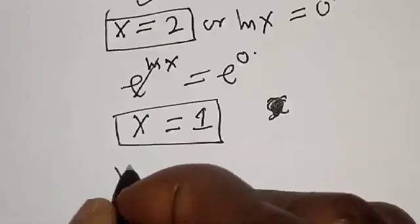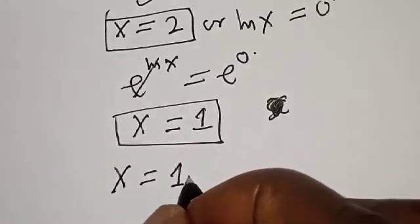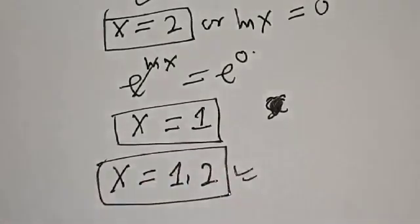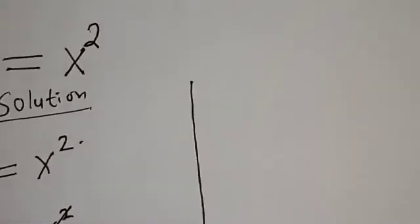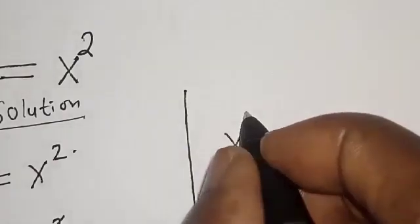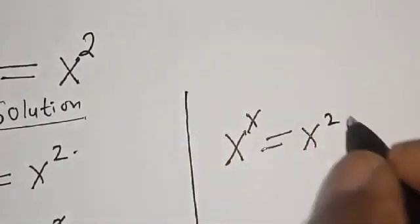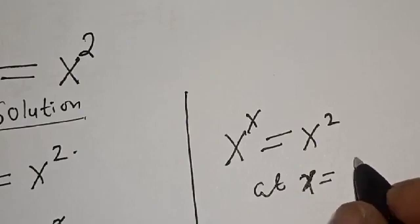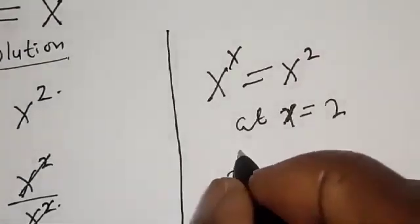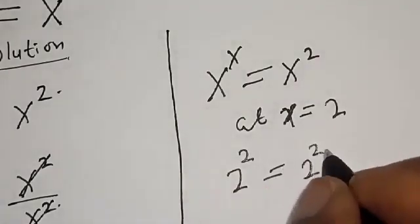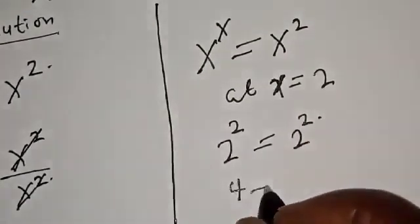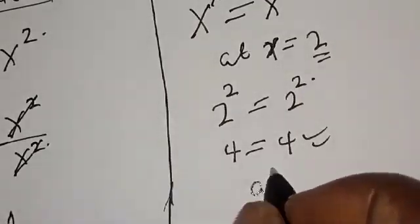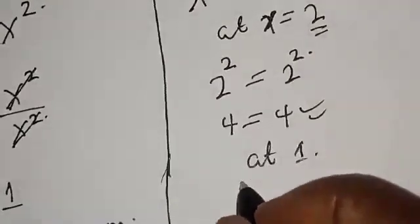Therefore our answers are s is equal to one or two — that is our final answer. Let's check to confirm. For the given equation s raised to power s is equal to s squared, at s equals two we have two raised to power two is equal to two squared, and two squared is four equals four. We satisfy the given equation at s equal to two.